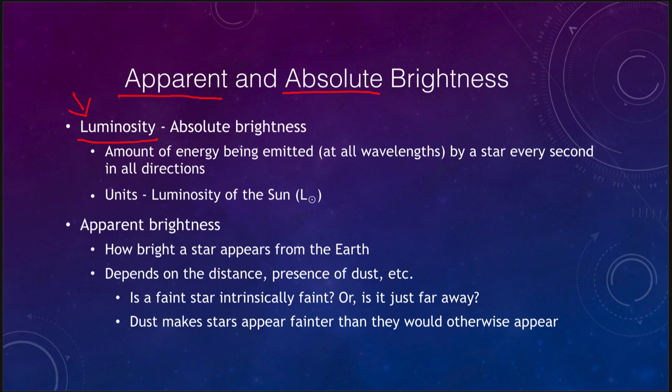The luminosity is the amount of energy being emitted at all wavelengths by a star every second in all directions — a real measure of the amount of energy a star is emitting at all times. So it doesn't count just the energy from the Sun heading towards us at Earth, but heading out elsewhere in the solar system and into space, and it counts all wavelengths, not just visible light. For a star like the Sun, yes, most of the energy is emitted at visible light wavelengths, some is in the infrared and some in the ultraviolet, but the vast majority is in the visible.